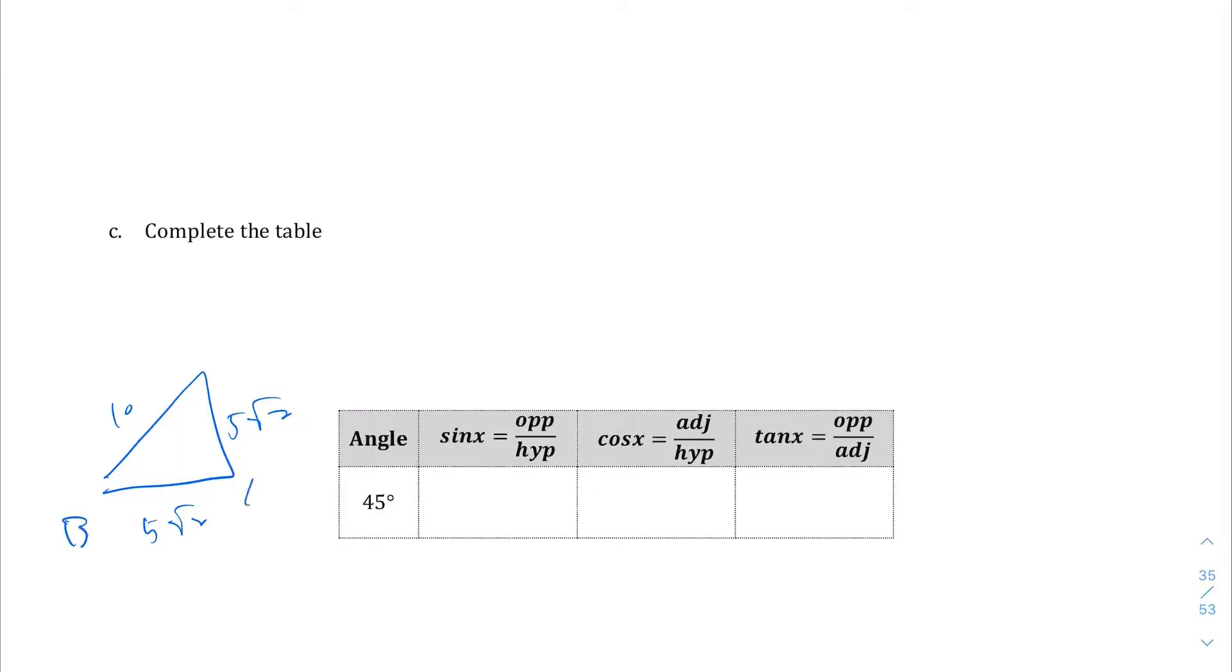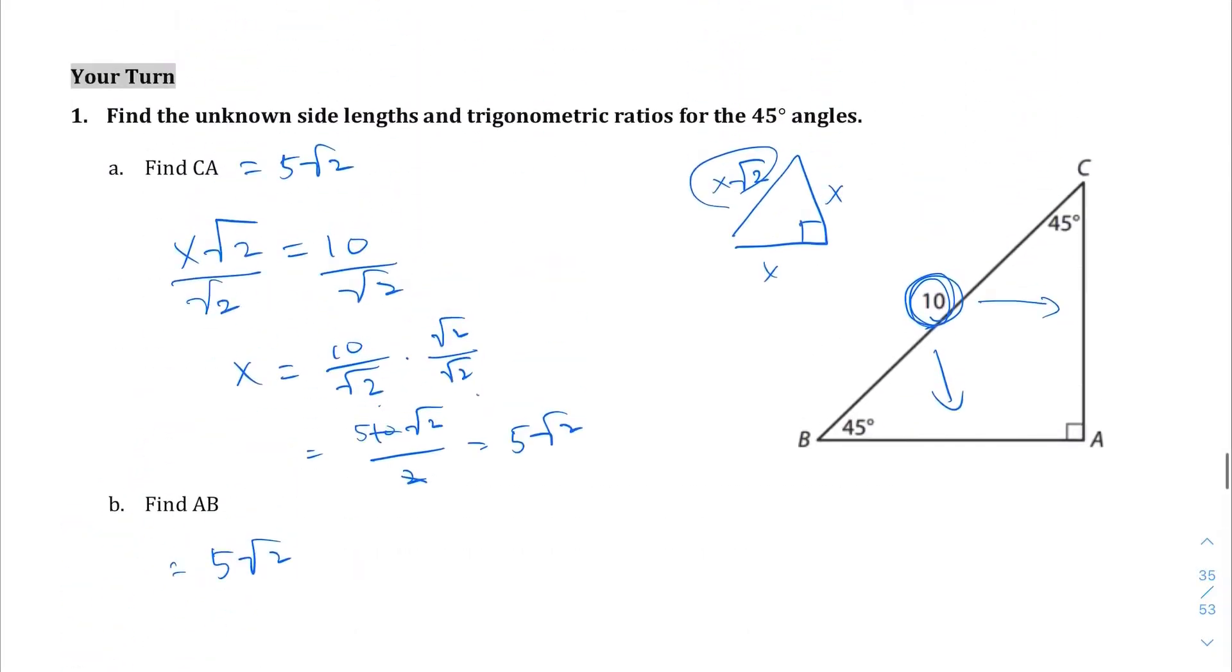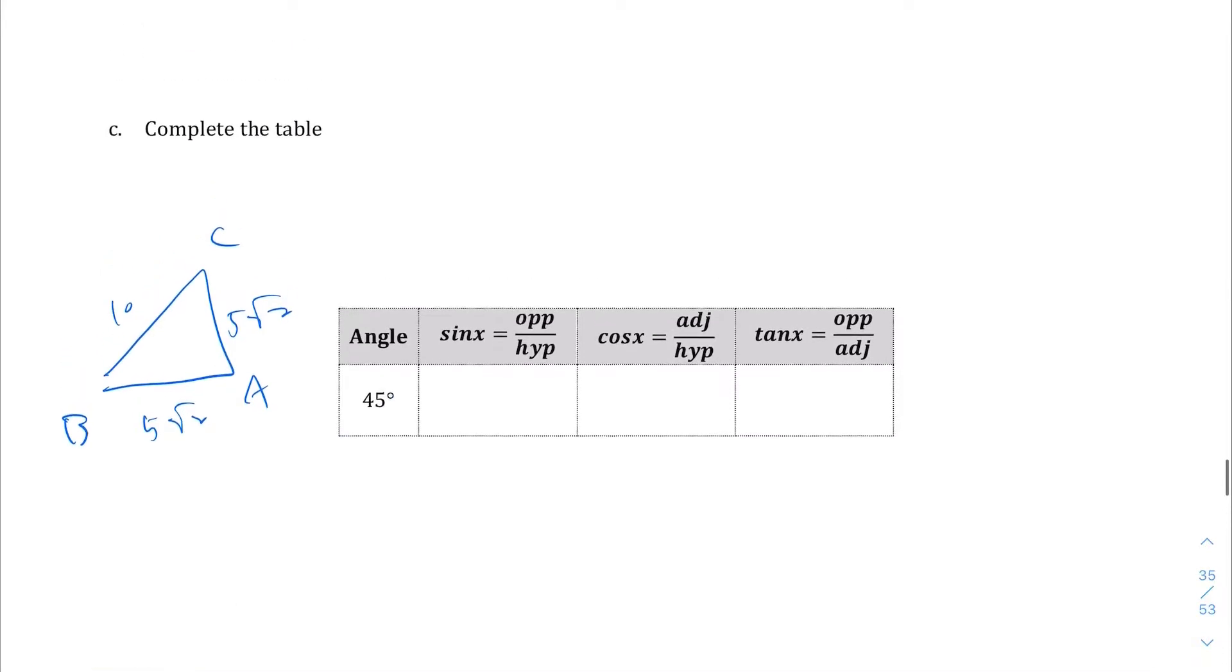They want the sine of x, which is opposite over hypotenuse. Opposite over hypotenuse is going to be the same thing for whichever angle you go with. If you go with this 45 degree angle or that 45 degree angle, opposite is always going to be 5√2 just because of the type of special right triangle it is.